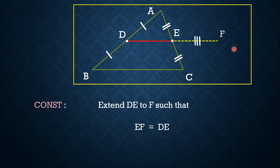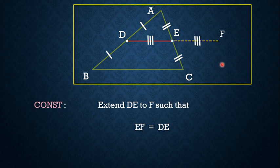Observe the figure — EF must be equal to DE. We need to extend the line segment DE in such a way. Once we do that, we need to join F and C. That is the simple construction, and with the help of this, we can easily demonstrate the midpoint theorem.